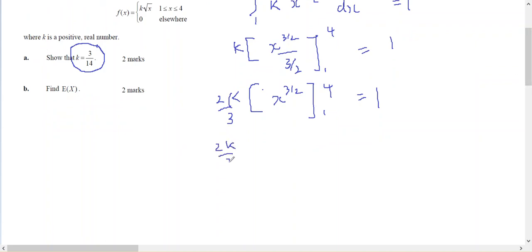So 2k on 3, times 4 to the 3 on 2, minus 1 to the 3 on 2, should equal 1.